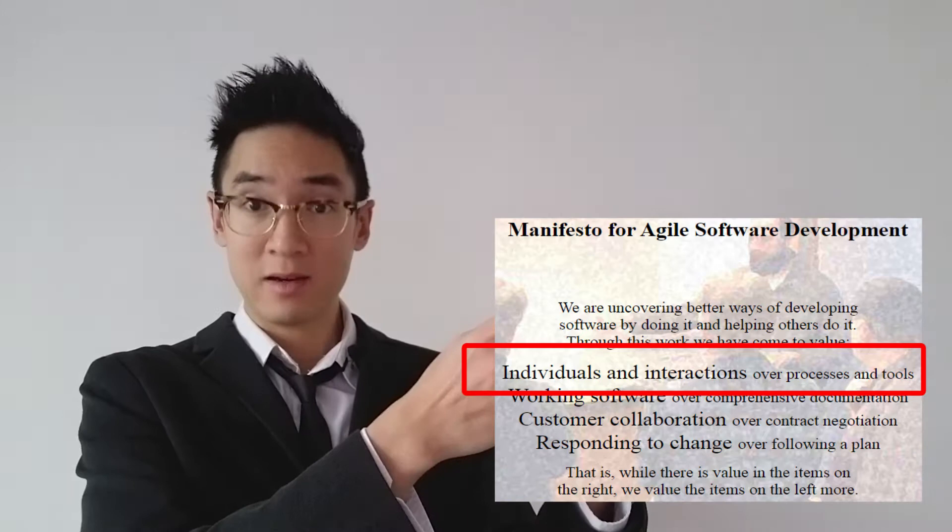And very importantly, the agile manifesto says collaboration over process and tools. SAFe is clearly a process, not a collaboration. So you must let your employees collaborate and find the right way, the most effective way to collaborate in order to deliver what you want, and not just apply the details of these pictures exactly.